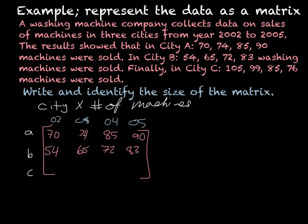So then we identify the size of the matrix. The size is going to be the number of rows, which is three, by the number of columns, which is one, two, three, four. So three by four matrix.